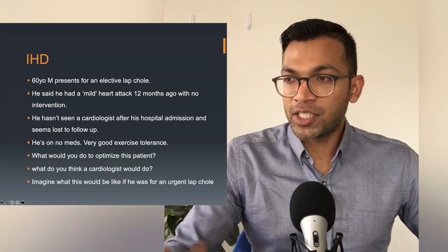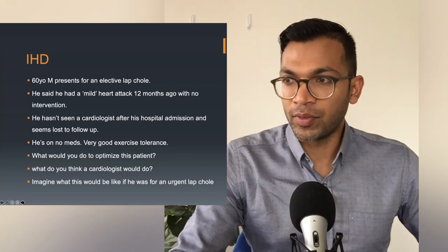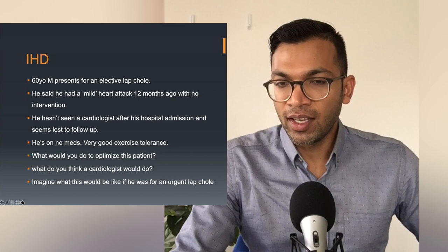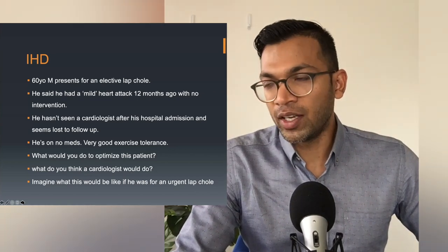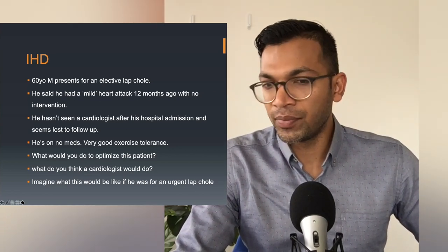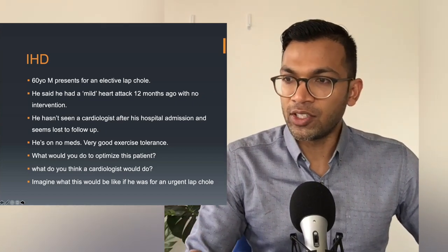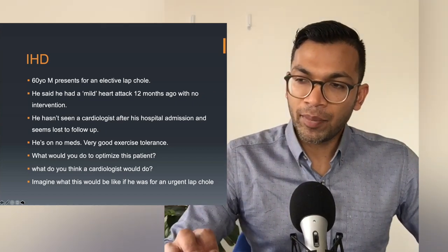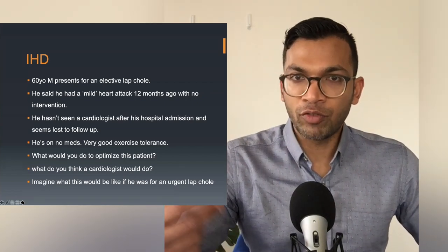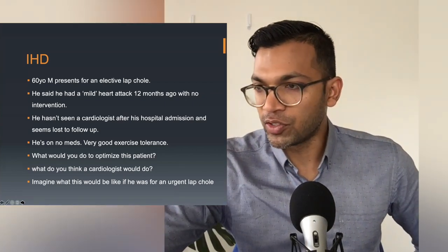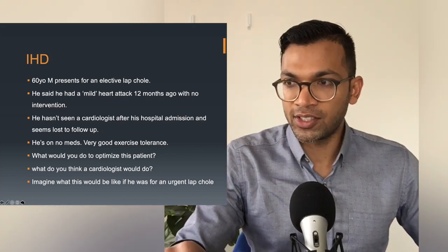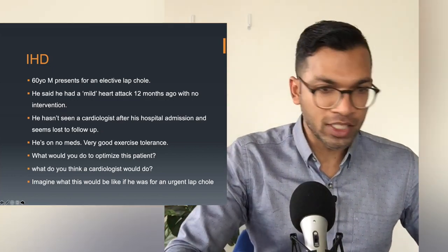I may start aspirin straight away, especially if it's a low bleed risk surgery like a laparoscopic cholecystectomy. In consultation with a cardiologist, I might also start a beta blocker. These aren't things you necessarily do automatically, but as a junior, being able to pick this up and make a judgment call — offering value — is a very useful skill to have.